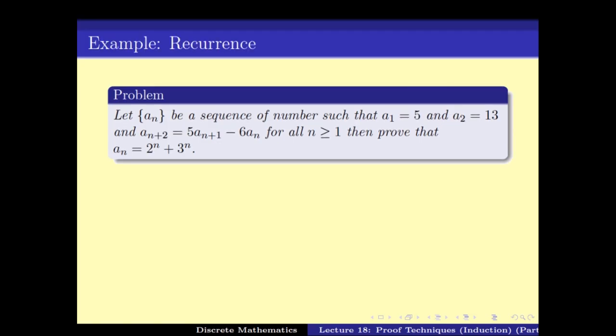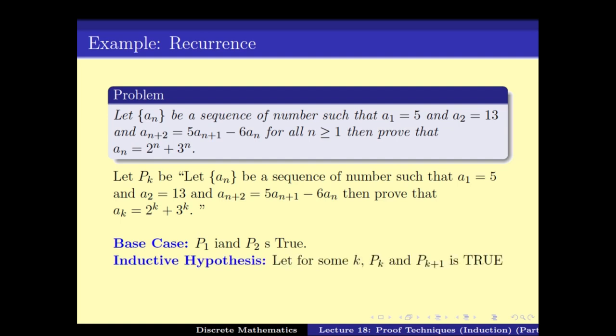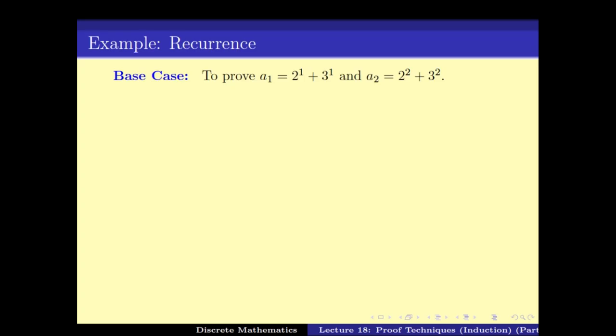To solve this, we use Version 4: the base case proves P1 and P2. We prove A1 = 2^1 + 3^1 and A2 = 2^2 + 3^2. These can be checked and verified easily from the given values A1 = 5 and A2 = 13.